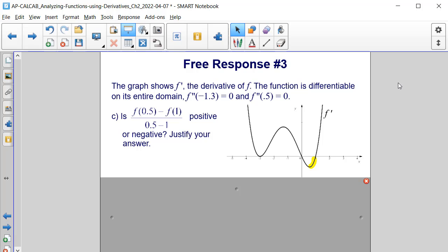And now let's look at part c. Is f of 1 half minus f of 1 divided by 1 half minus 1 positive or negative? We need to justify our answer. Well, this expression represents the slope of a secant line within this interval from 1 half up to 1.